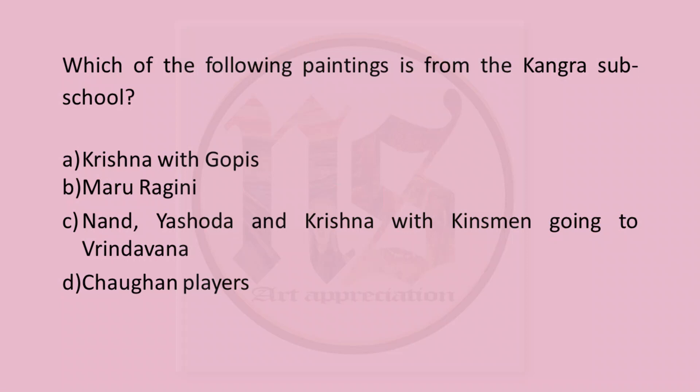Another direct question from the table: which of the following paintings is from the Kangra sub-school? The answer is C — Nand Yashoda and Krishna with kinsmen going to Vrindavan is the correct answer.